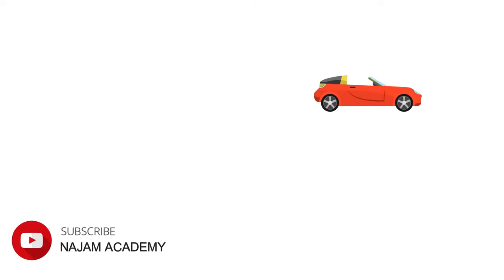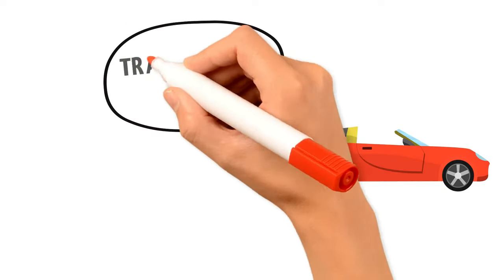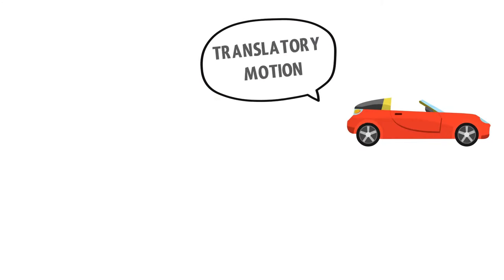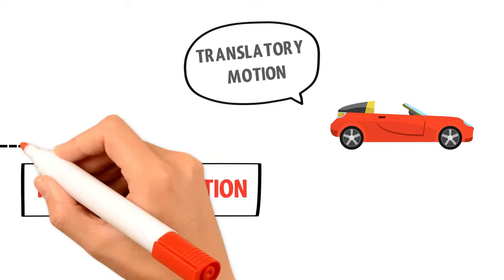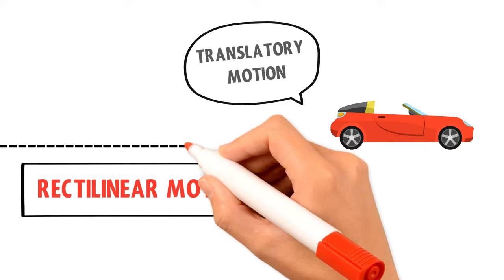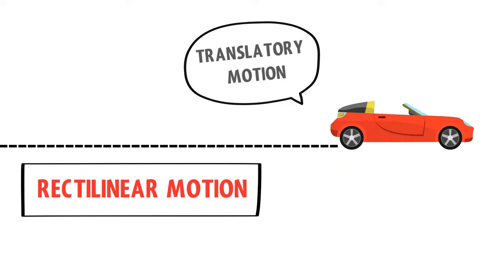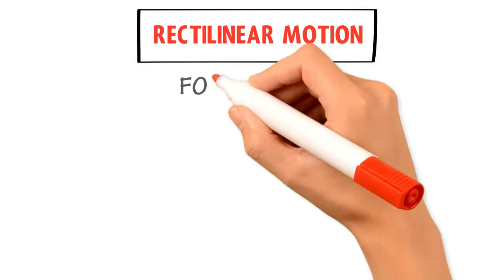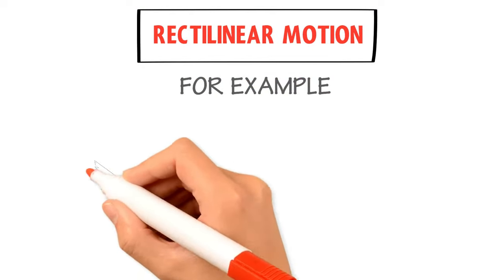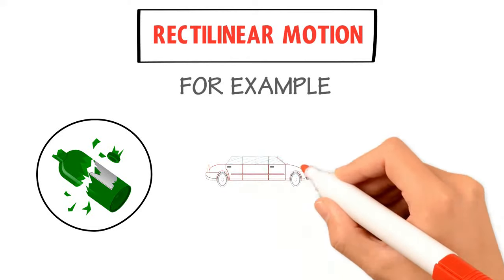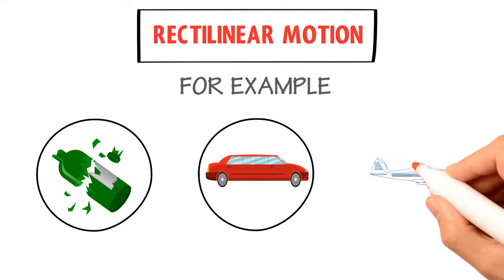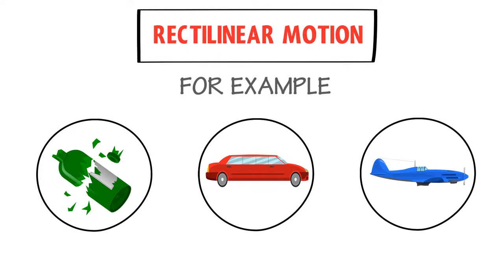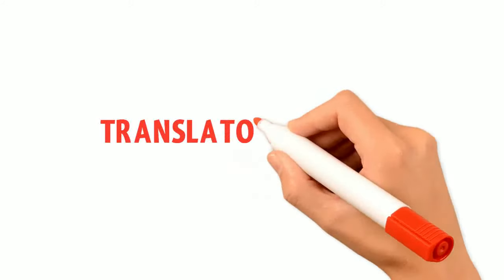When a body moves along a straight line, it is in translatory motion, and such type of translatory motion is also known as rectilinear motion. Therefore, remember that linear motion, or motion along a straight line, is also known as rectilinear motion. For example, the motion of a falling object, the motion of a car on a road, and the motion of aeroplanes are all rectilinear motions.